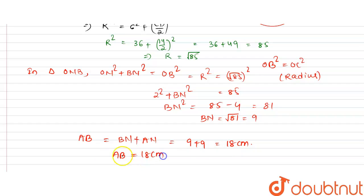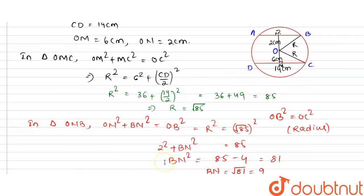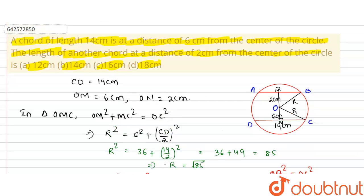Therefore the chord AB is equal to 18 centimeters, which corresponds to option D. Option D is the correct answer.